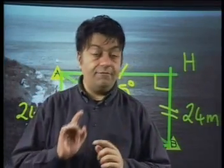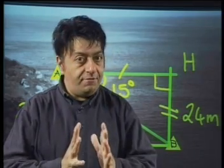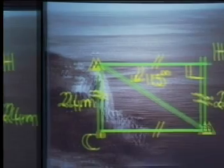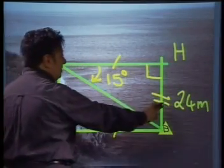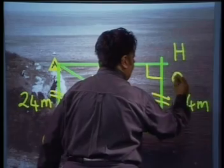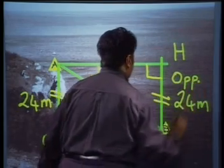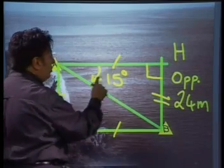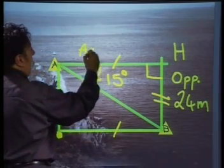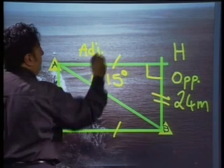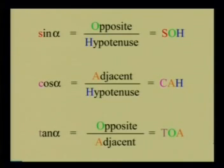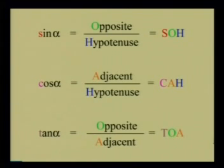Now that we have two angles and a side, we have enough information to do some trigonometry. HB is opposite angle A, and AH is next to, or adjacent to, angle A. Opposite over adjacent — which trig ratio do we use? The tan ratio, because tan of an angle is equal to the opposite side divided by the adjacent side.